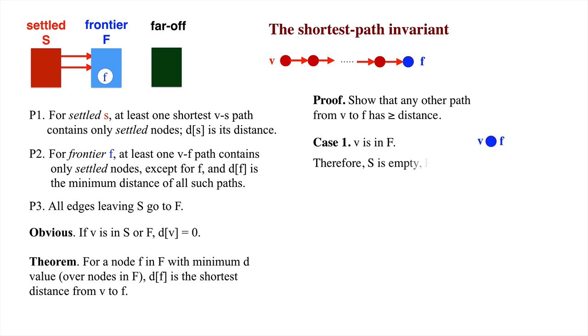Second, since v is in the frontier set, by P2, the frontier set contains only one node, v. Third, we know that d sub v is 0, and 0 is the distance of the shortest path from v to v.